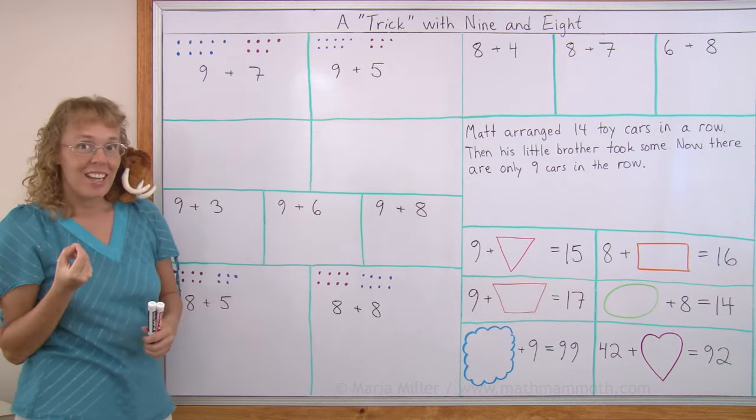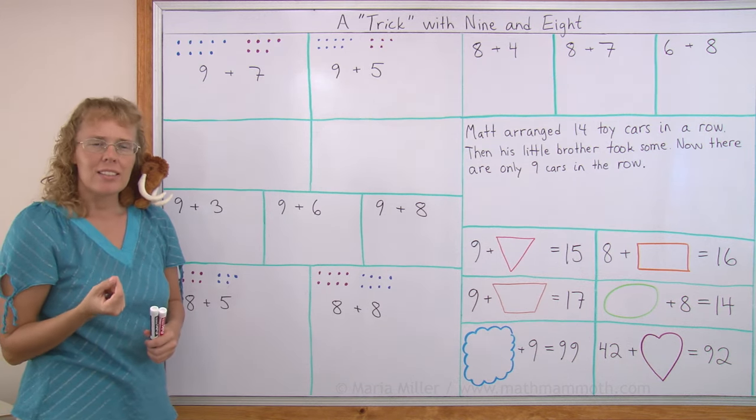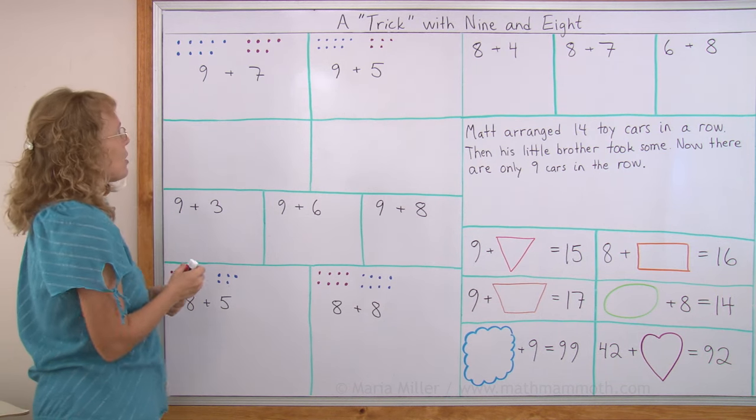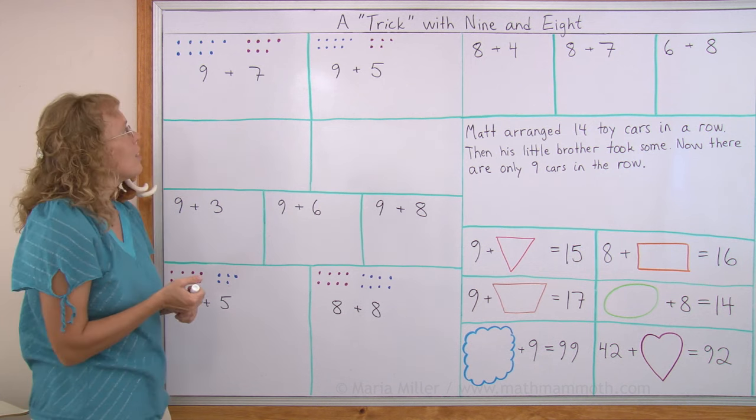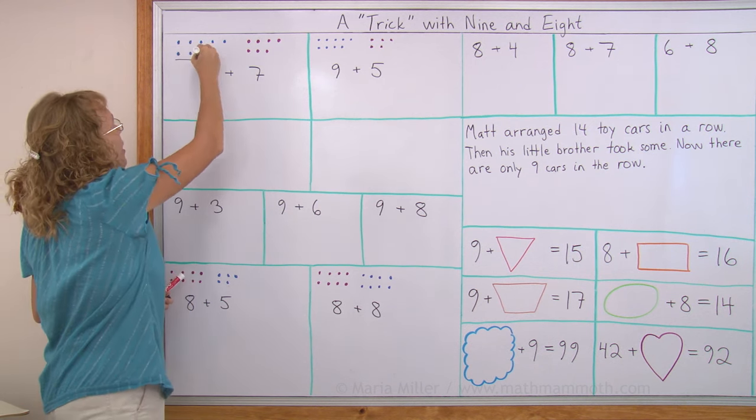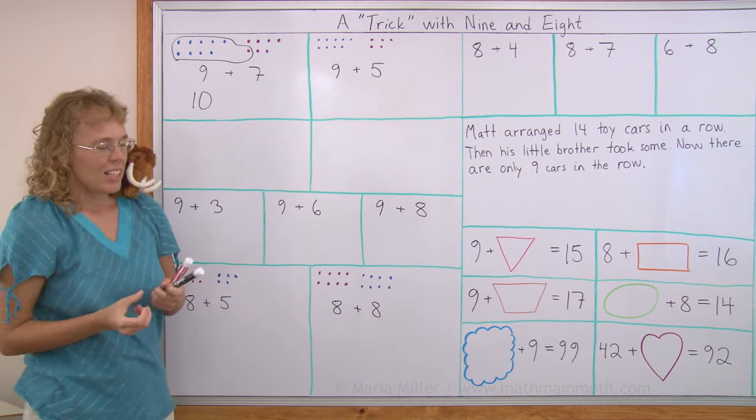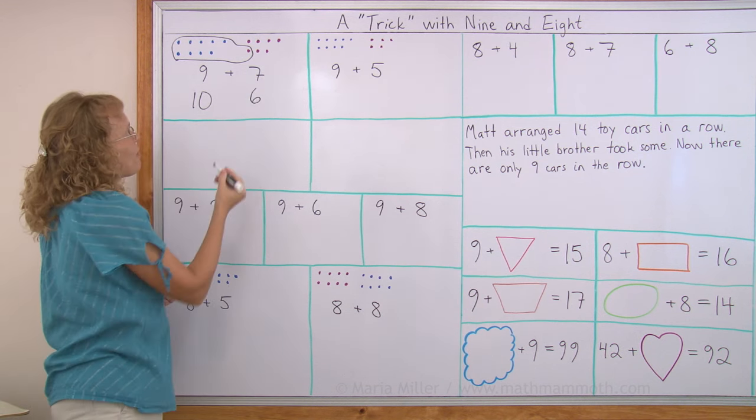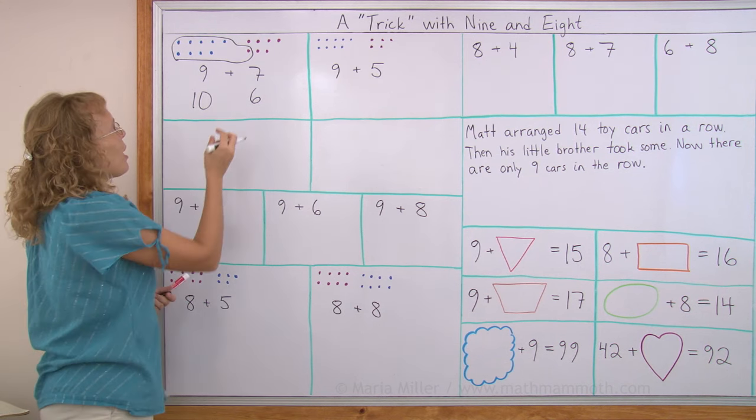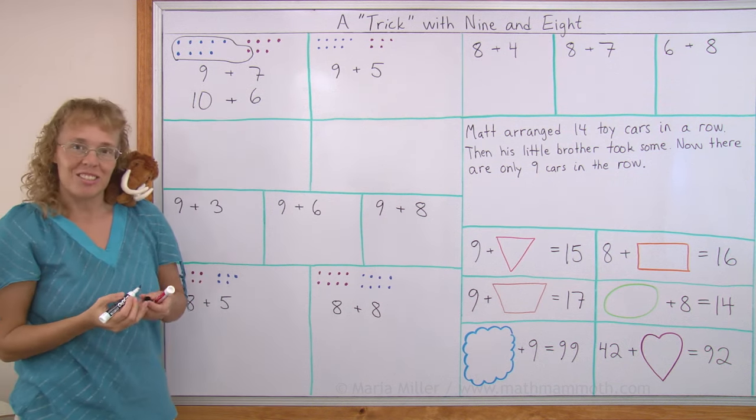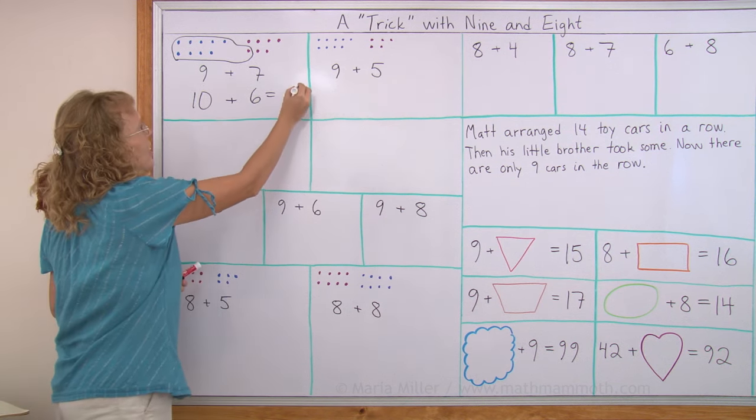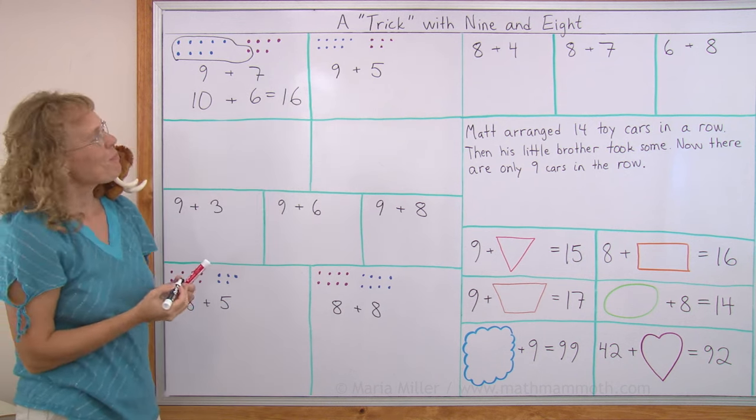9 plus 7. We have 9 that wants to become 10. It's not happy. It wants to be 10. So what does it do? It asks 7, can you give me 1? So 7 says, OK. And then 9 gets to be 10. But what happened to 7 now? 7 only has 6 left. And so our addition problem 9 plus 7 has changed into 10 plus 6. That's an easy addition, right? It's one of the teen numbers. It has 6 here too. 16.